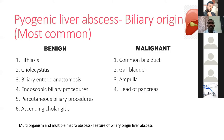Biliary origin can be benign or malignant. Benign causes include choledocholithiasis, polycystic disease, biliary-enteric anastomosis, endoscopic or percutaneous biliary procedures, and ascending cholangitis — the most common being stone pathology. Malignant etiologies include common bile duct cancer, gallbladder malignancy, peri-ampullary carcinoma, or carcinoma of the head of the pancreas. Biliary origin liver abscess usually has multiple organisms and multiple macro-abscesses.